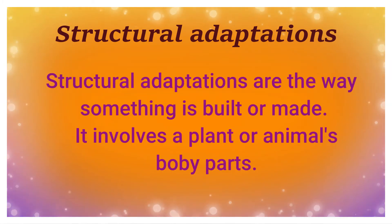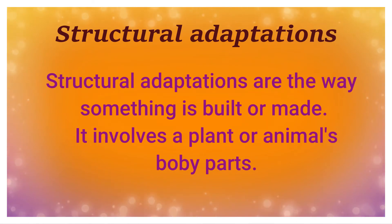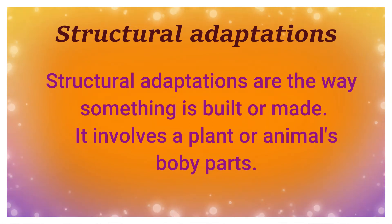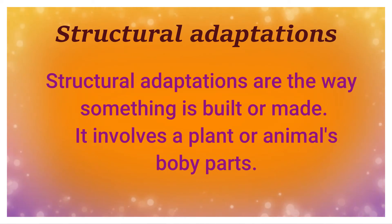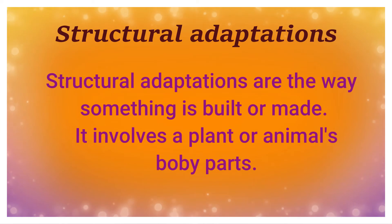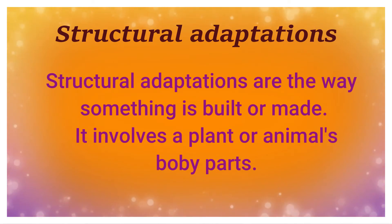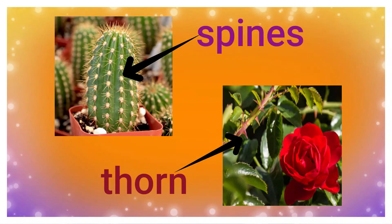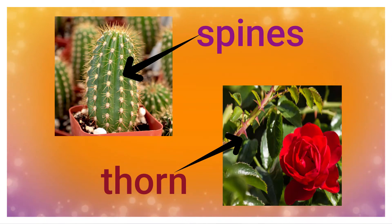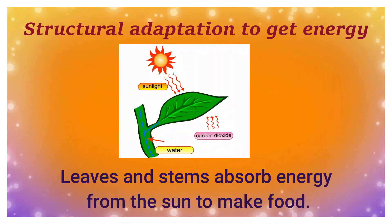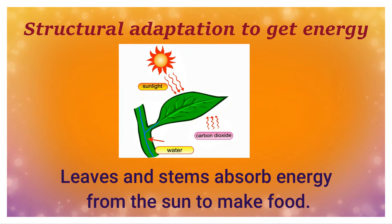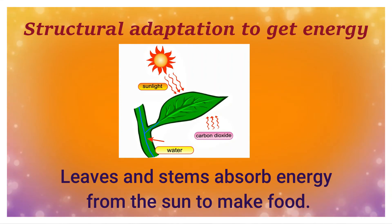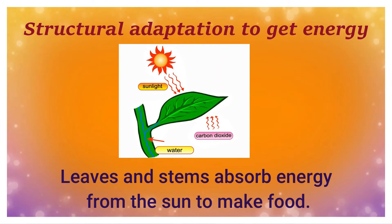Structural adaptations are the way something is built or made. It involves a plant or animal's body parts — some structure is present in the plant which helps them adapt to their surroundings. For example, leaves and stems absorb energy from the sun to make food. This is a structural adaptation to get energy.